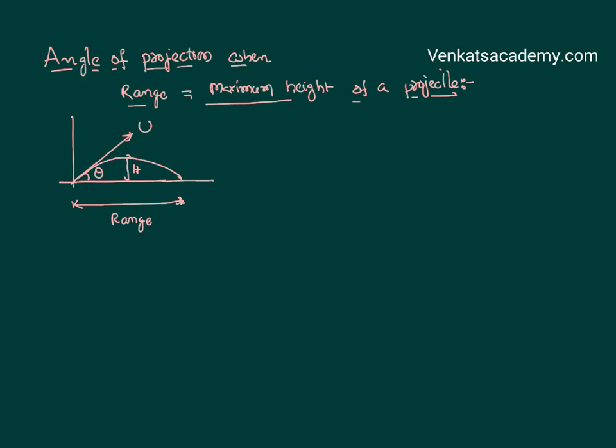Along the y direction, that is called h maximum. You probably know we have proved in the previous post that the equation for the range of a projectile is u square sin 2 theta by g, and the equation for the maximum height of the projectile is u square sin square theta by 2g.